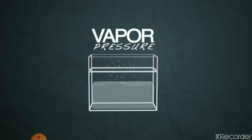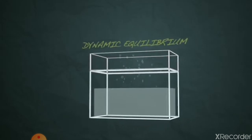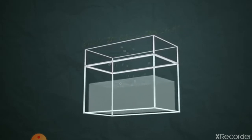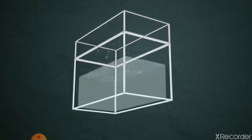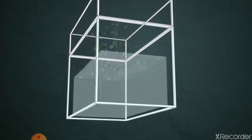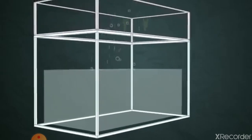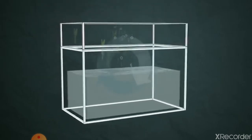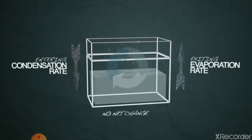This is called the dynamic equilibrium point. At this point, the vapors above the liquid surface apply pressure — this is called vapor pressure. At the dynamic equilibrium point, the pressure exerted by vapors on the surface of any liquid is called vapor pressure. You can see in the diagram how vapors are exerting pressure on their own surface.